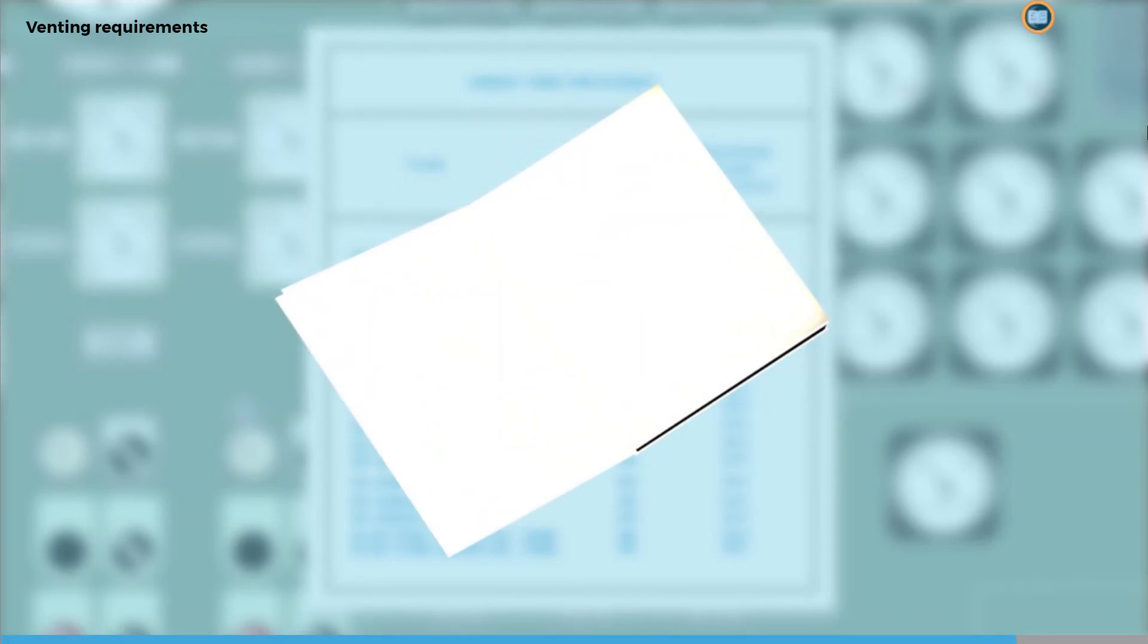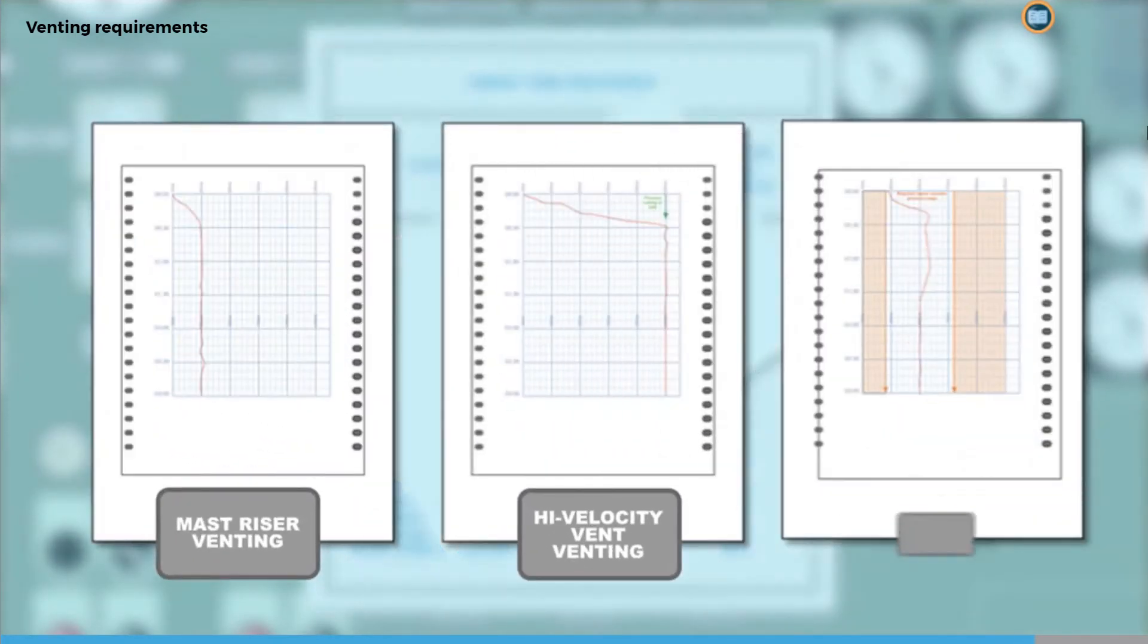When loading, the officer controlling the operation needs to recognize an appropriate trace to expect on the inert gas pressure recorder. Click on each of the graphs to find out more about the various venting methods.